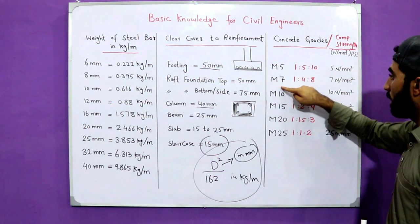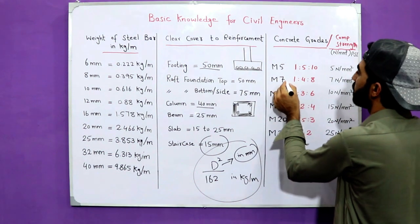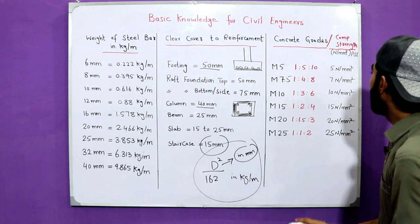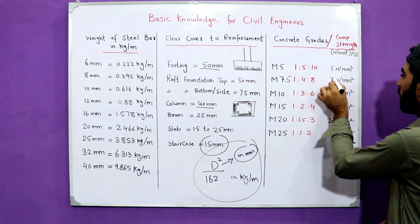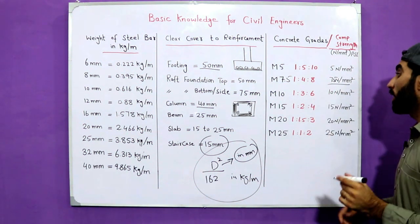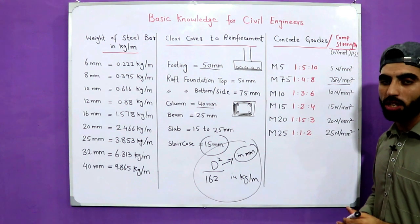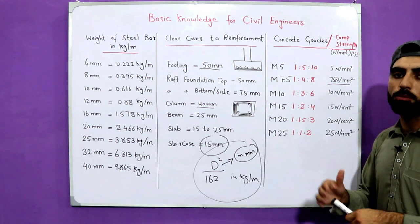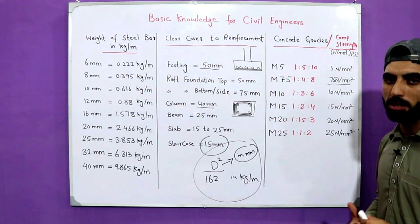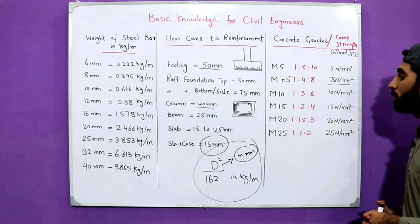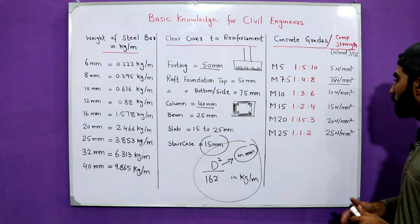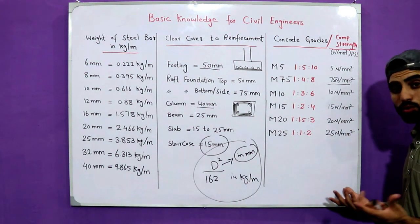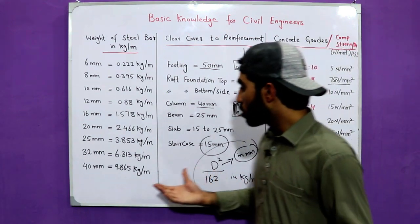The compressive strength of M5 grade concrete is 5 Newton per mm², M7.5 is 7.5 Newton per mm², M10 is 10 Newton per mm². For M15 it's 15 Newton per mm², M20 is 20 Newton per mm², and M25 is 25 Newton per mm². This is after 28 days with concrete cube size 15cm × 15cm × 15cm.